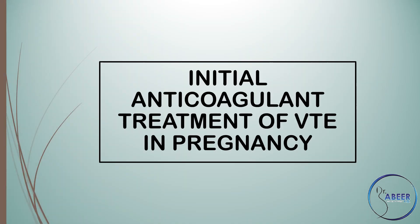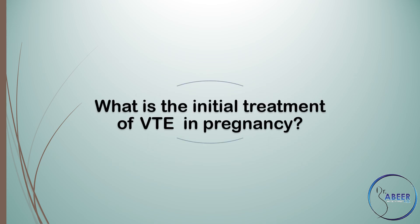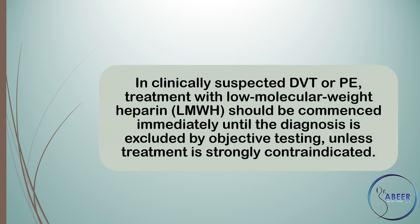Initial anticoagulant treatment of venous thromboembolism in pregnancy. In clinically suspected deep vein thrombosis or pulmonary embolism, treatment with low molecular weight heparin (LMWH) should be commenced immediately until the diagnosis is excluded by objective testing, unless treatment is strongly contraindicated.